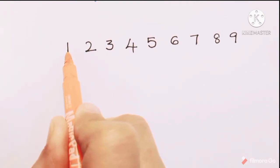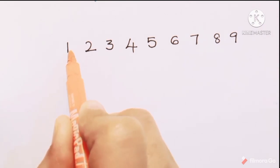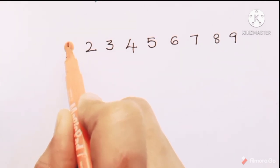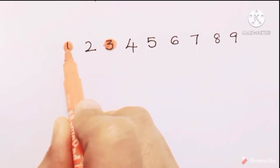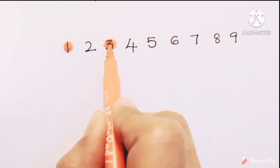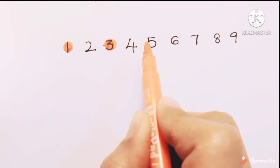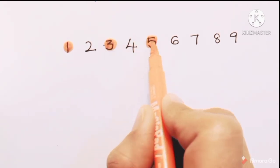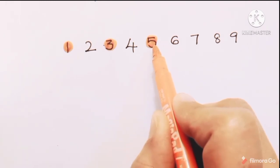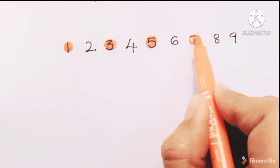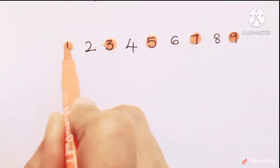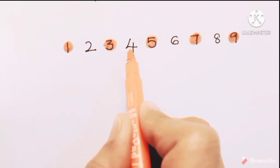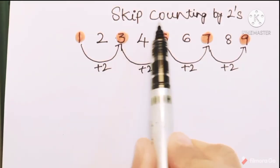Suppose if we start at the number 1 — from 1, just count two numbers forward: 1, 2 — so the next number is 3. After 3, count two numbers: 1, 2 — so after 3 the next number in skip counting by twos is 5. From 5 count two numbers forward, then after 7 count two numbers: 1, 2.